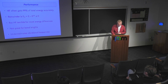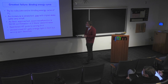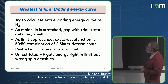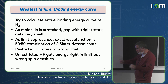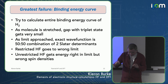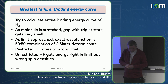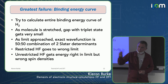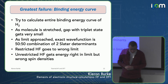Hartree-Fock is not good for realistic calculations, and essentially nobody uses it anymore. Another major problem is that it's a single-determinant theory. If you want to calculate the binding energy curve for H2, as you stretch and pull the two hydrogens apart, the gap between the singlet ground state and the triplet state gets very small. Heitler and London showed long ago that the exact wave function in the limit of pulling them apart is a 50-50 combination of two Slater determinants. Your Hartree-Fock doesn't get that right.